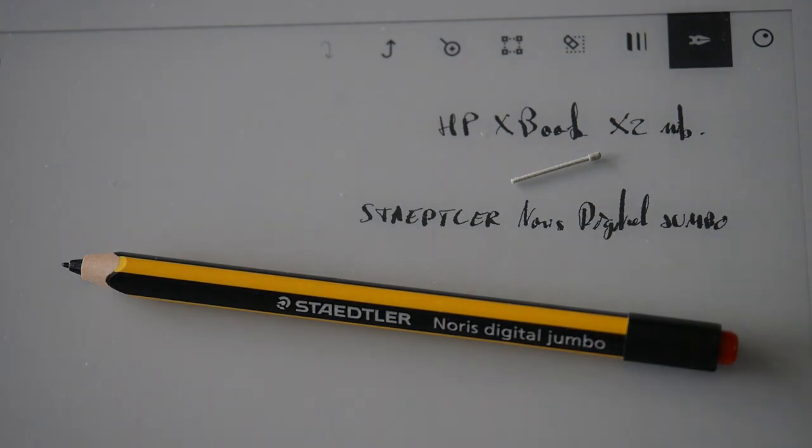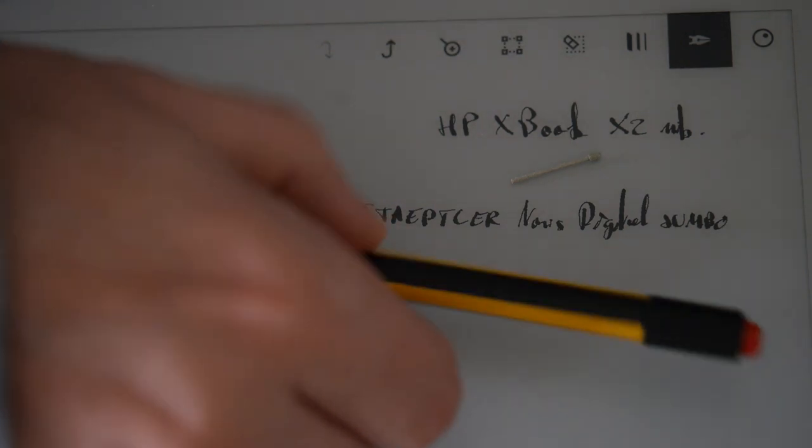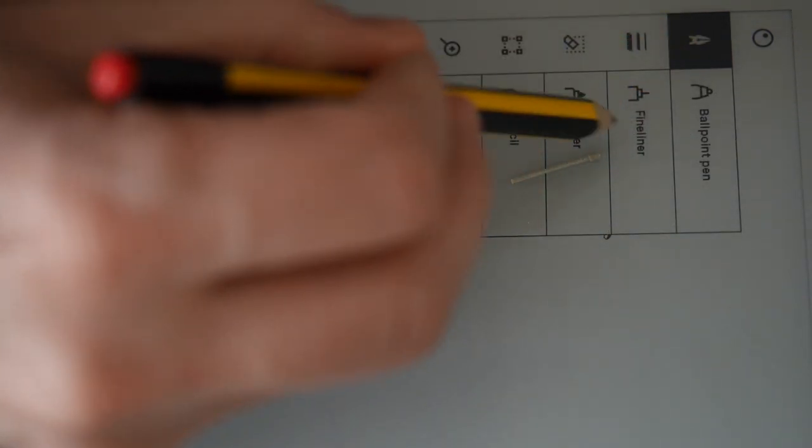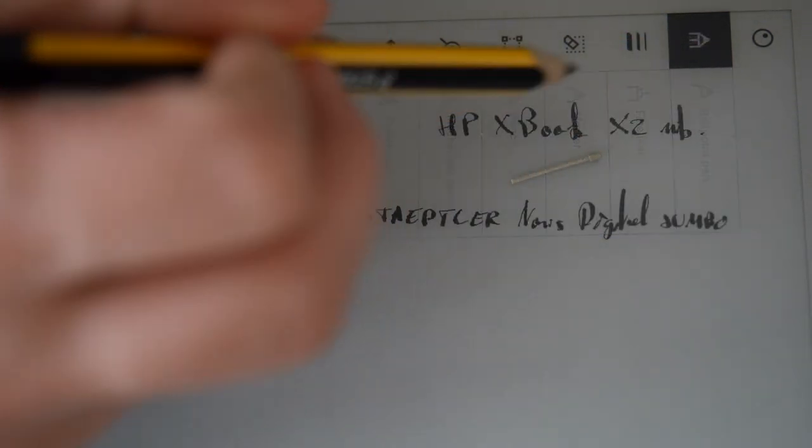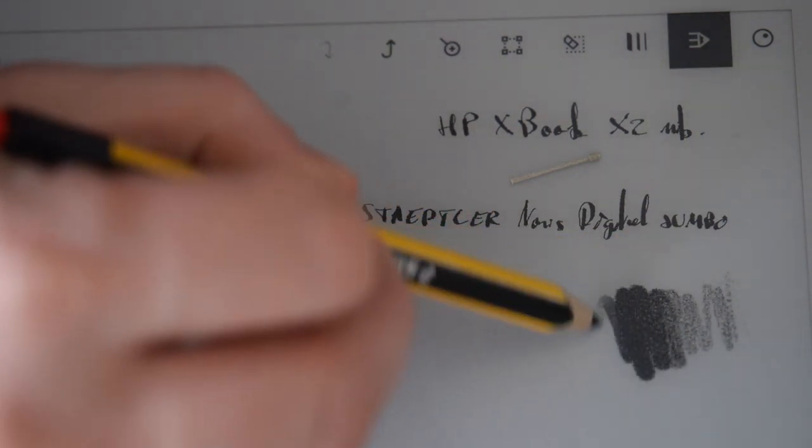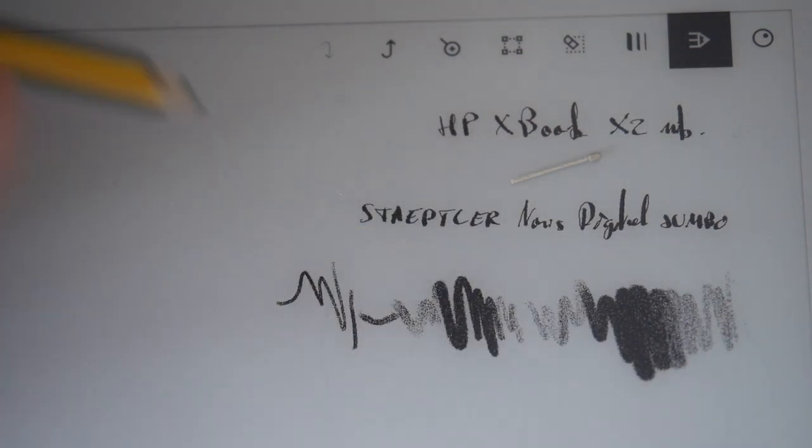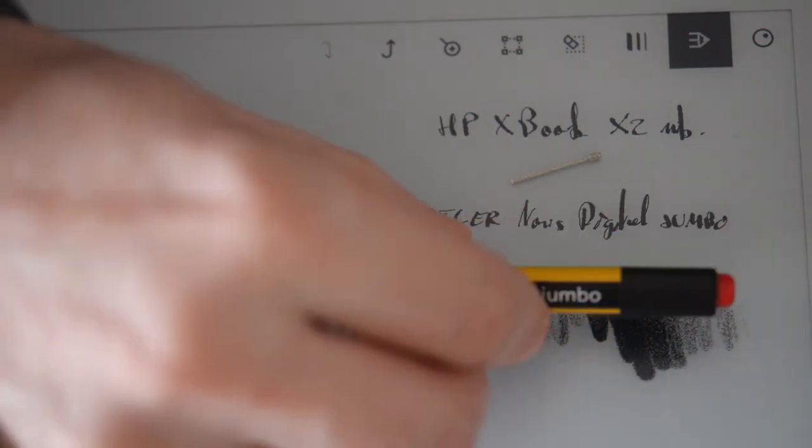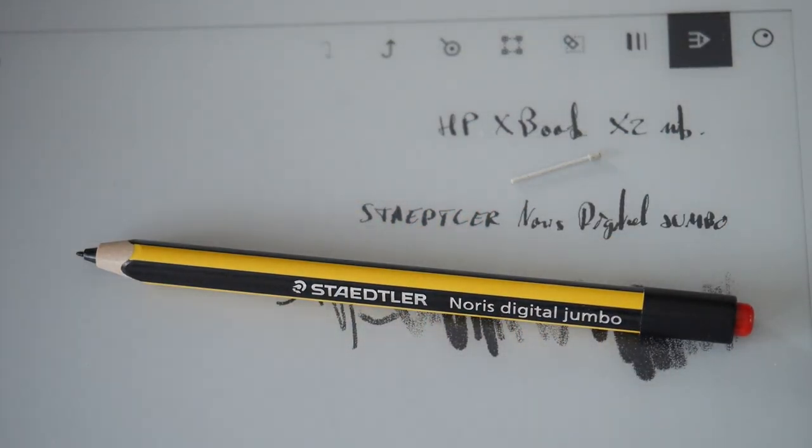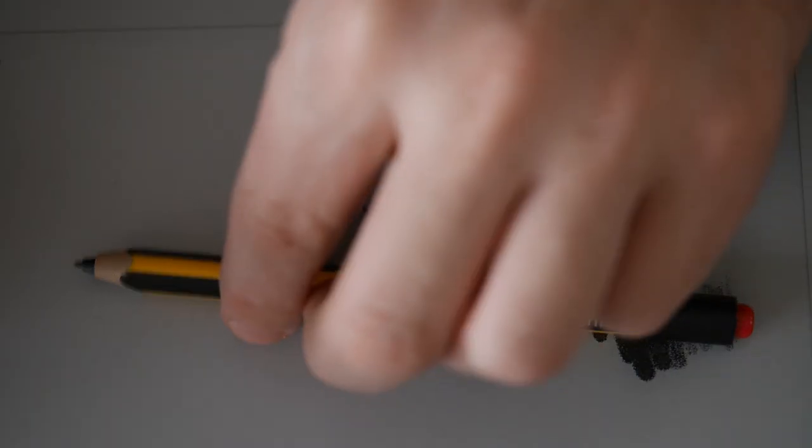Hi everyone, today I'm going to show you how to use the HP Z Book extra nib with the Staedtler Norris Digital Jumbo. As you know, the Jumbo is a really good pen, but the nibs provided are specific and provide a sliding sensation on our tablets. On the other hand, the HP Z Book extra nibs are probably the best nibs for a pencil on paper friction sensation.